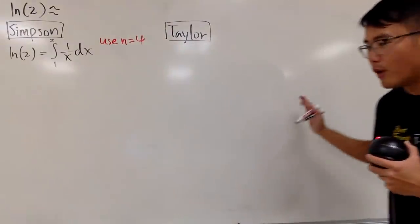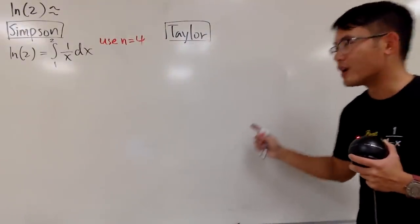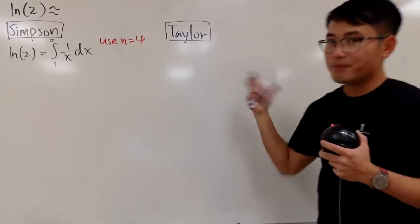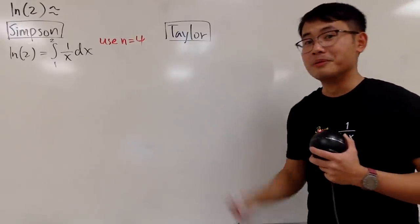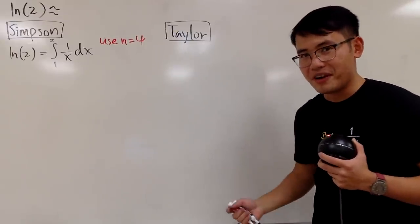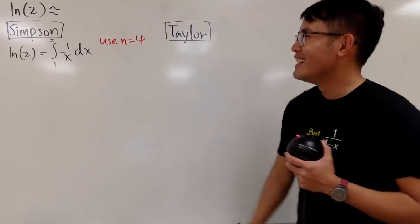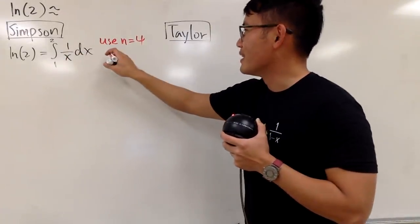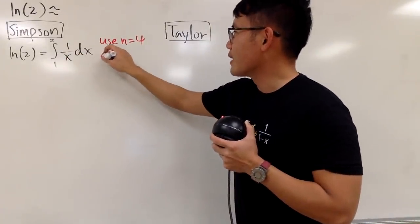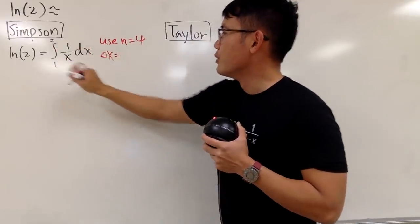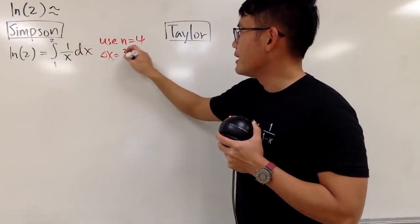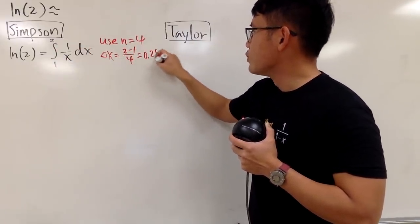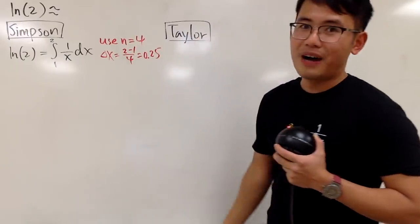Therefore, I will also be using the first four non-zero terms of the Taylor series to approximate ln2 — that's how we can be fair. This integral goes from 1 to 2, so we calculate delta x, which is (2 minus 1) over 4, giving us 0.25.